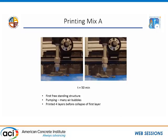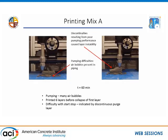For mixture A, the first print we achieved was not very good. The material is freestanding for only a few layers, there are lots of air voids in the system, and print quality is generally poor. At 60 minutes after mixing — hydration time — we see a slight improvement and can stack more layers, because the yield stress increases as hydration continues. But we still generally have poor print quality.